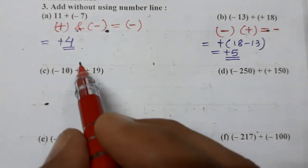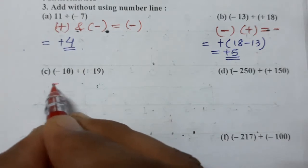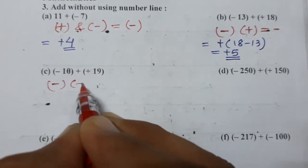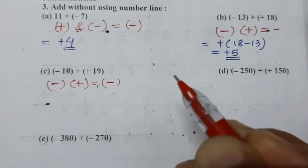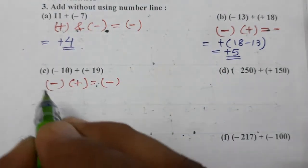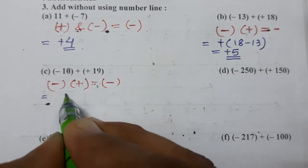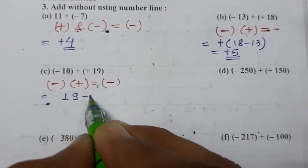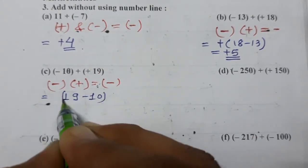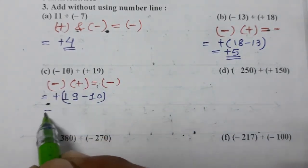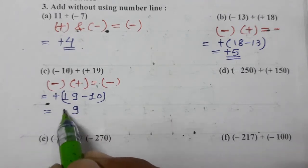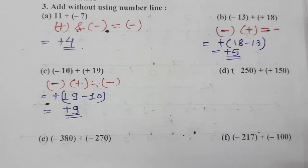Now we will do (c). Again minus 10, plus 19. One minus one plus, so minus plus, we know minus plus when comes, that means we have to subtract. So let's subtract. So 19 minus 10, subtract it, and put the sign of bigger one. So which one is bigger? Plus one is bigger, so plus sign will come. 19 minus 10 is 9. Plus 9 is the answer, simple 9 is the answer.